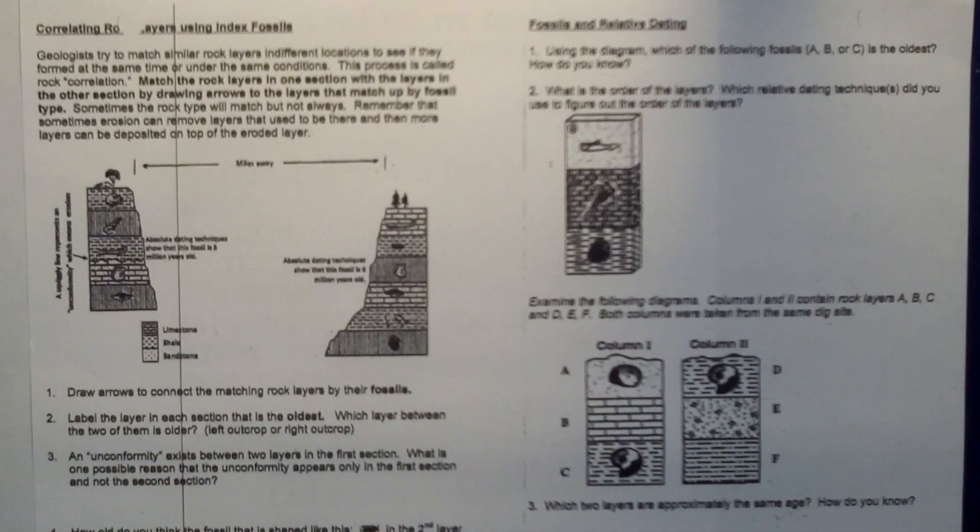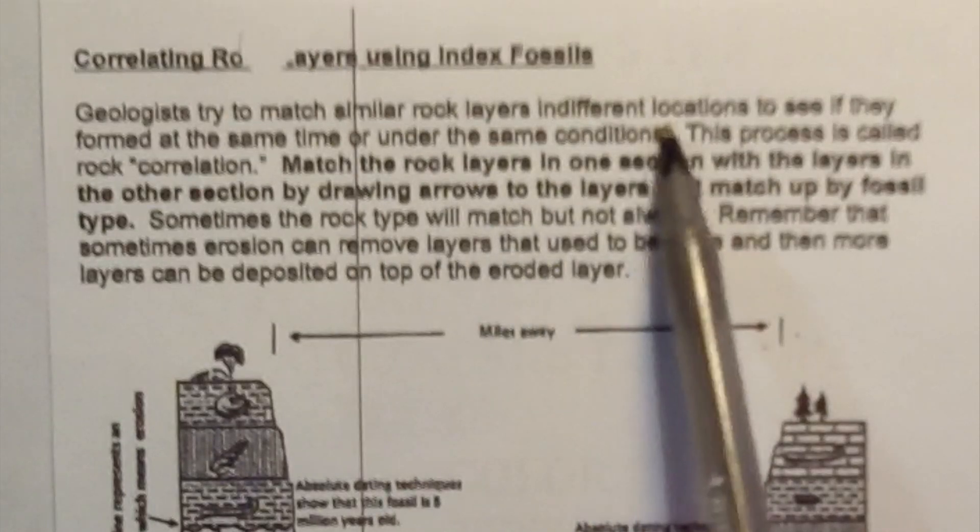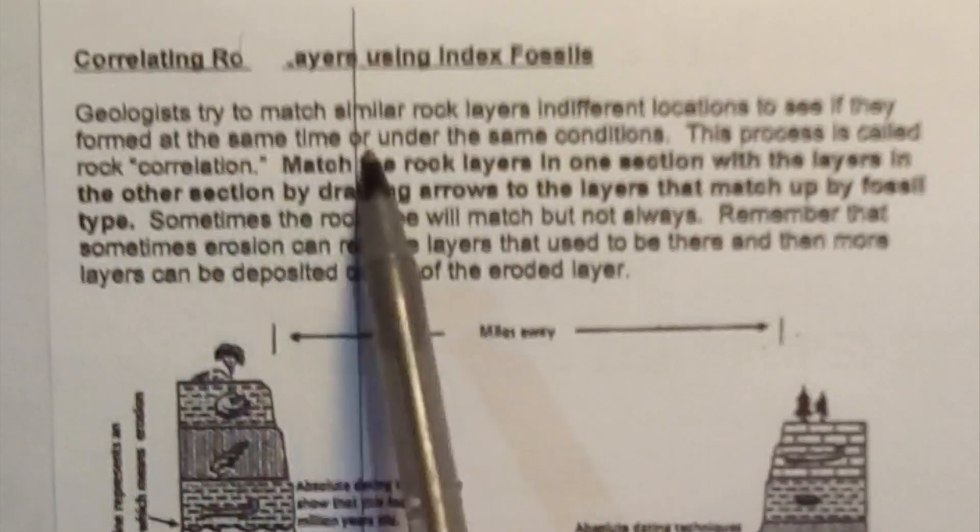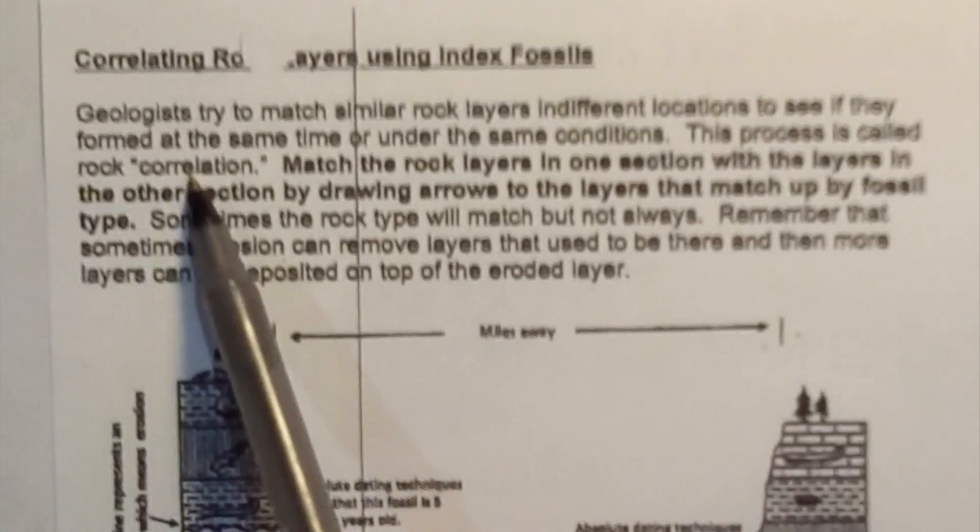Okay, this lesson is called Correlating Rock Layers Using Index Fossils. Geologists try to match similar rock layers in different locations to see if they formed at the same time or under the same conditions. This process is called rock correlation.